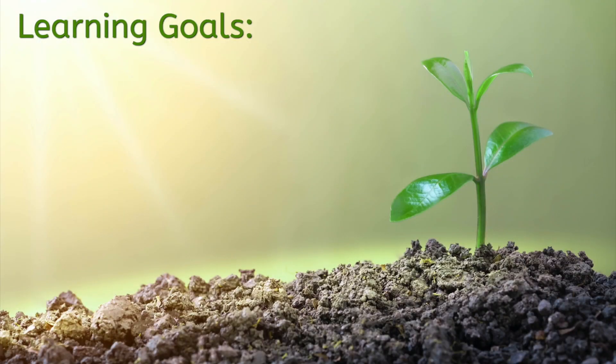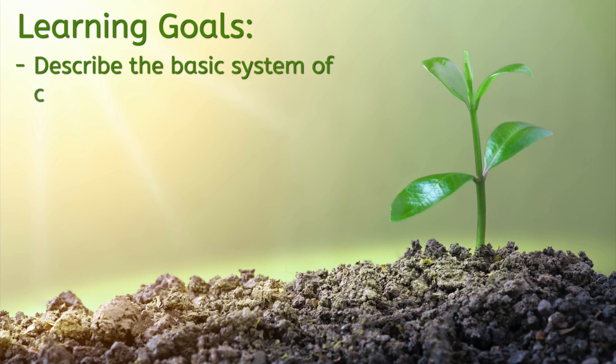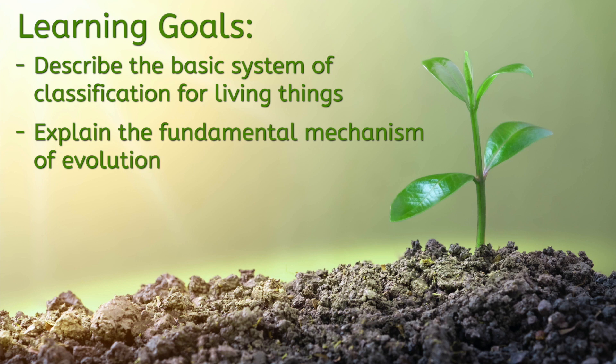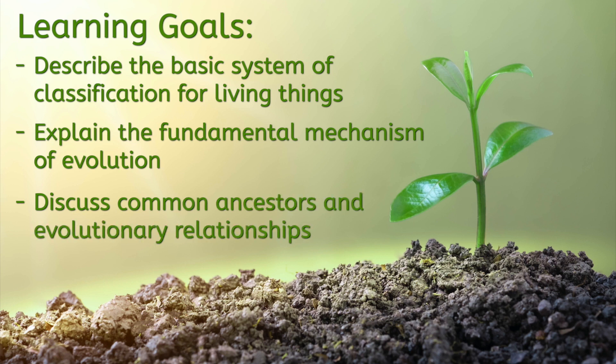After today's lesson, you'll be able to describe the basic system of classification for living things and explain how evolution occurs, which is responsible for the vast amount of biodiversity on Earth. We'll also look at how common ancestors can help us piece together evolutionary relationships. Ready? Let's get started!